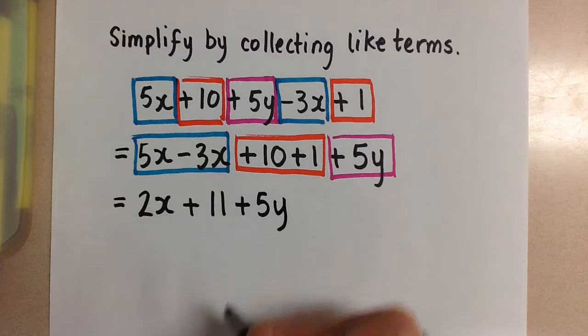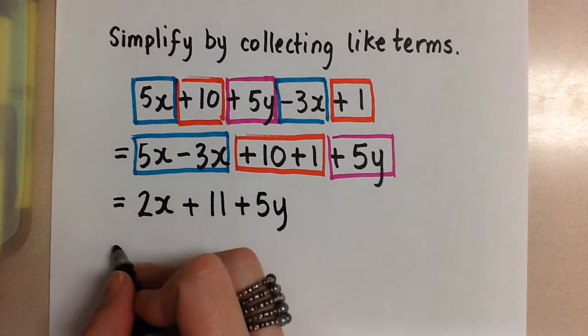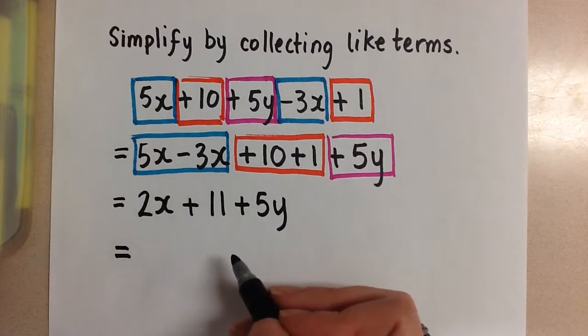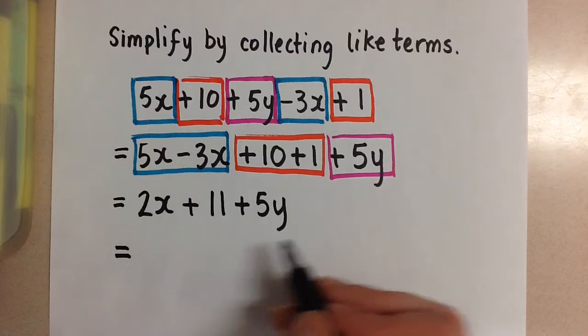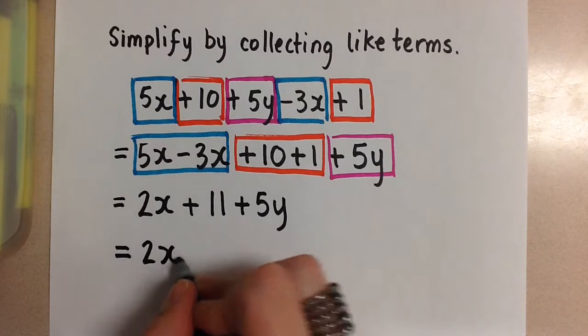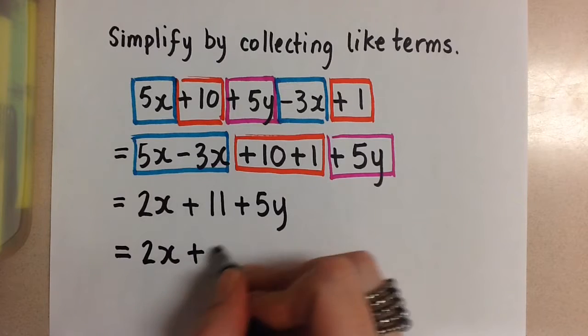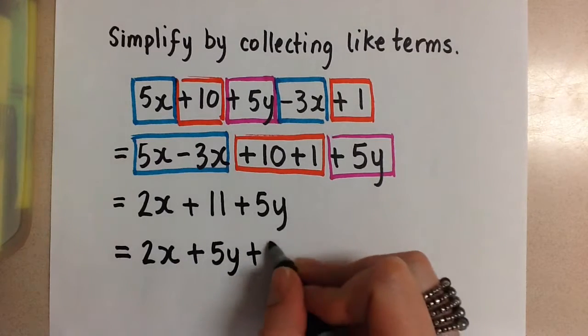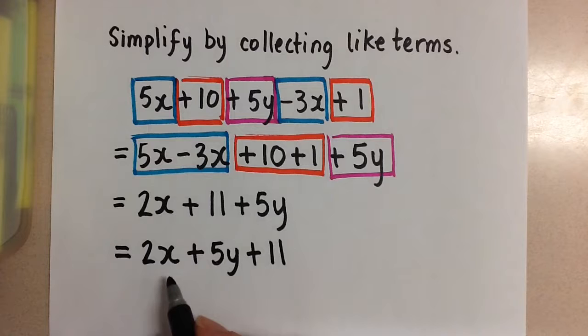Now usually when we do expressions we put the variables in alphabetical order and then any constant goes at the end. So just for good communication I'm going to rewrite this as 2x plus 5y plus 11.